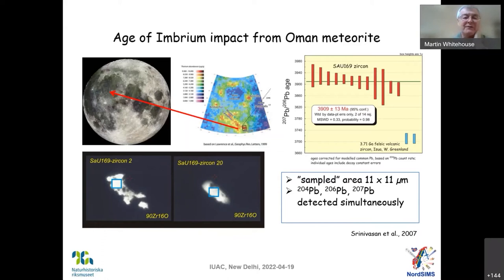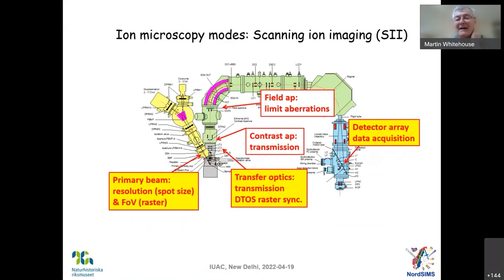Now, I wouldn't recommend using direct imaging very often — it's largely a setup tool. There's a much more powerful imaging mode in the instrument, and that is scanning ion imaging, or SII. And with scanning ion imaging, we do different things in the instrument.